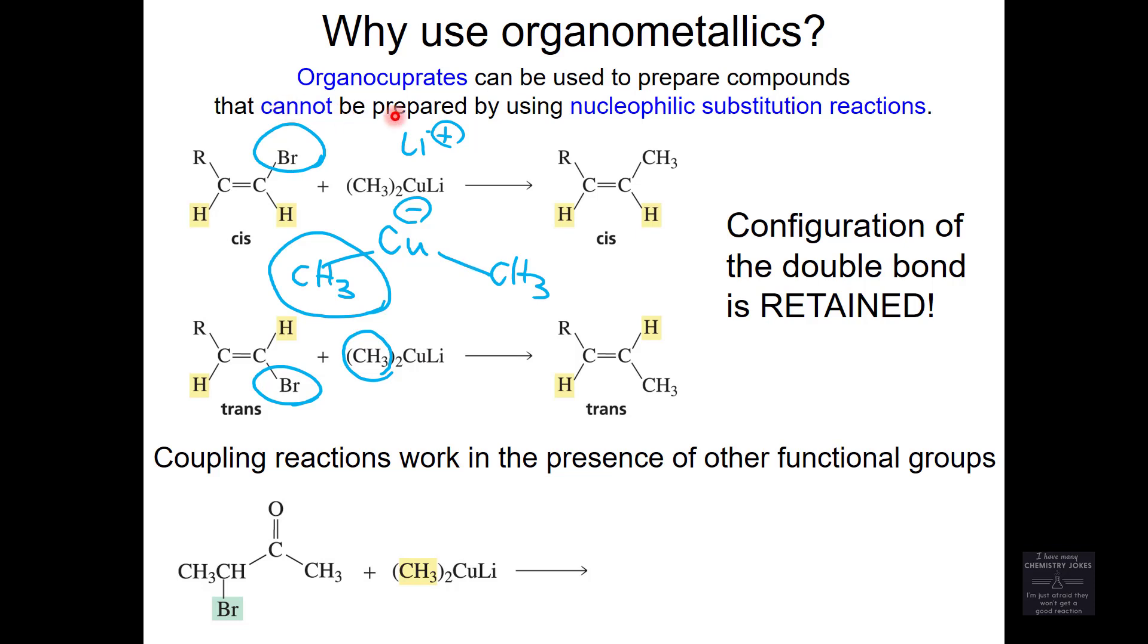Organocuprates can be used to prepare compounds that cannot be prepared by using nucleophilic substitution. This is an aryl halide. This is a vinyl halide. You cannot do SN1 on a vinyl halide. You cannot do SN2 on a vinyl halide. So, things that are not traditionally doable with our SN1, SN2 type mechanisms, you can do with a lithium dialkyl cuprate.